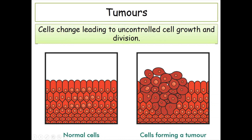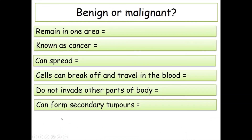Last part — a quiz on benign or malignant behavior. Question one: remains in one area. Question two: it's known as cancer. Question three: it can spread. Question four: cells can break up and travel in the blood. Question five: does not invade other parts of the body. Question six: can form secondary tumors. Pause the video and answer those.